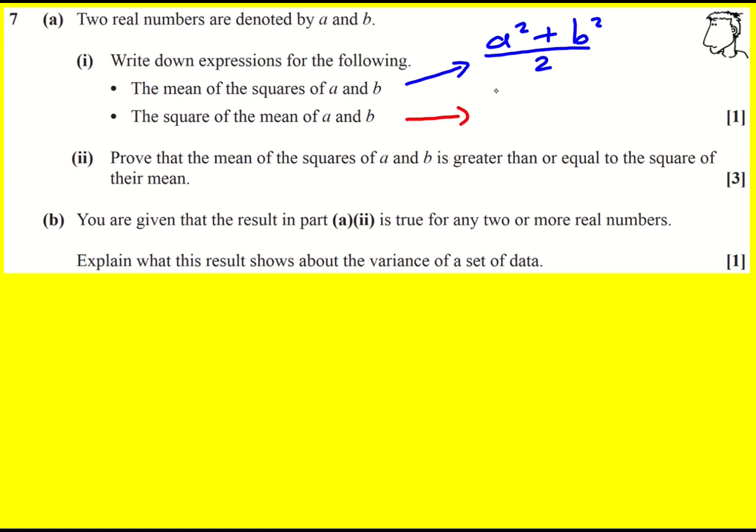And then secondly, the square of the mean. So here we add a and b together, divide by two. That'll give us the mean of a and b and then we square it. Now prove that the mean of the squares of a and b is greater or equal to the square of the mean.